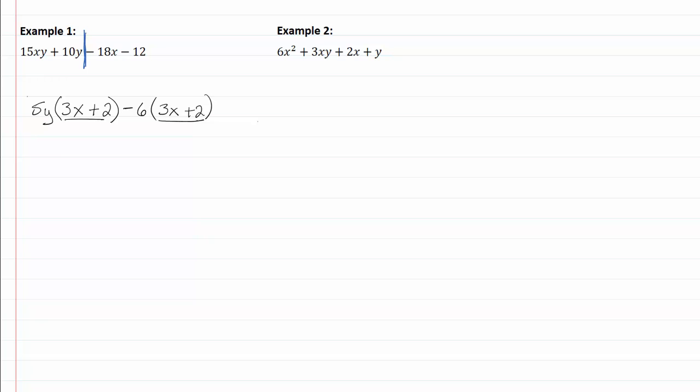These two binomials have to be the same in order to factor them out. So if I pull out a 3x plus 2, I'm going to be left with 5y minus 6.